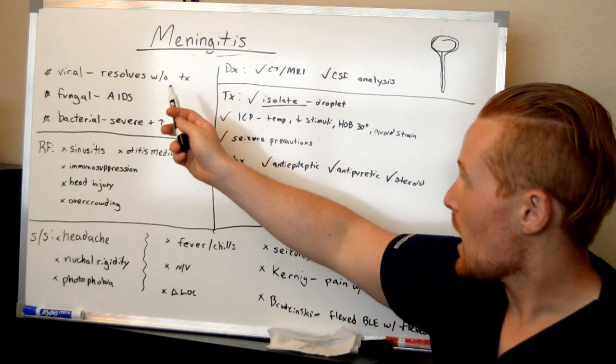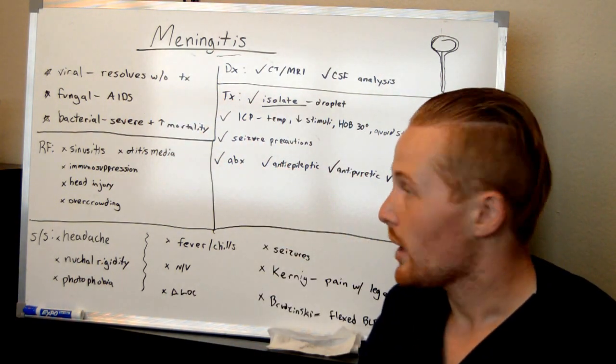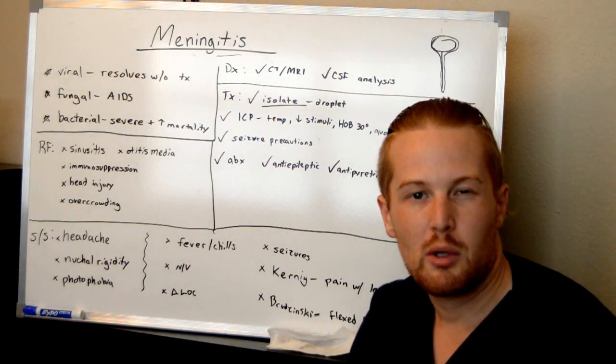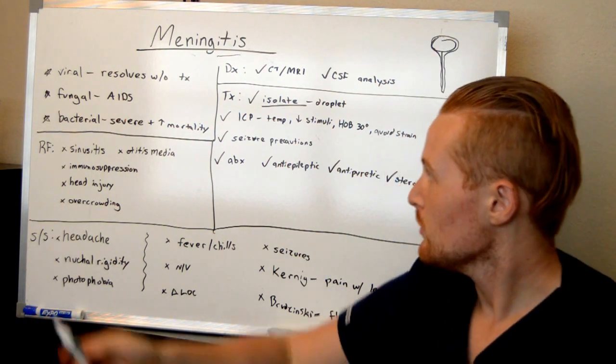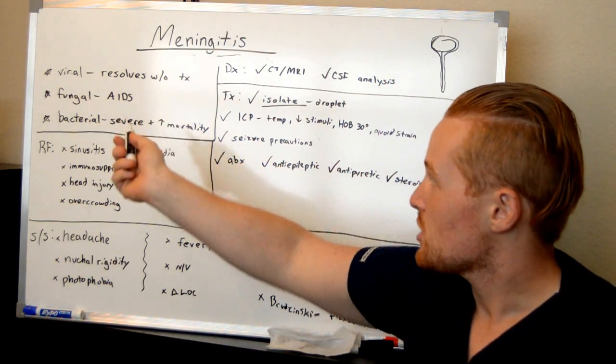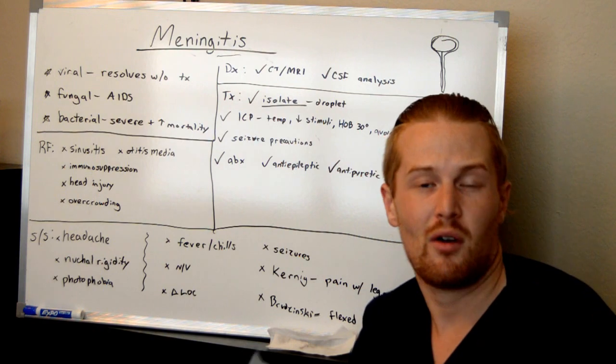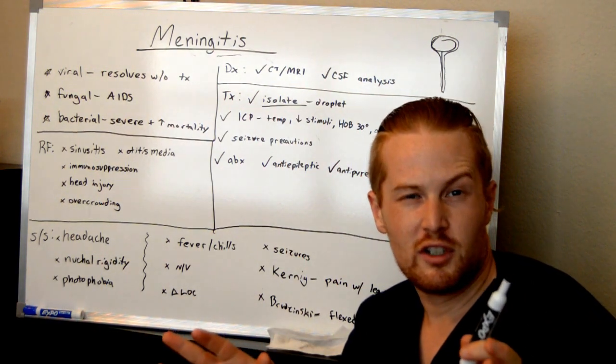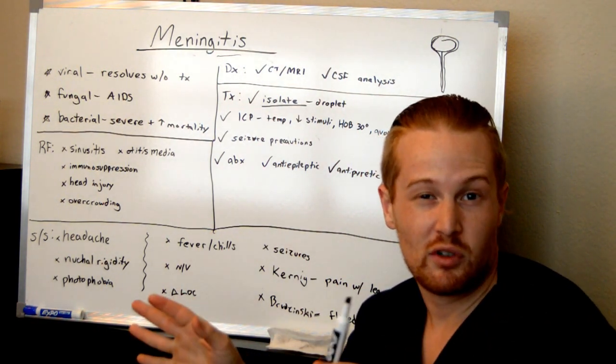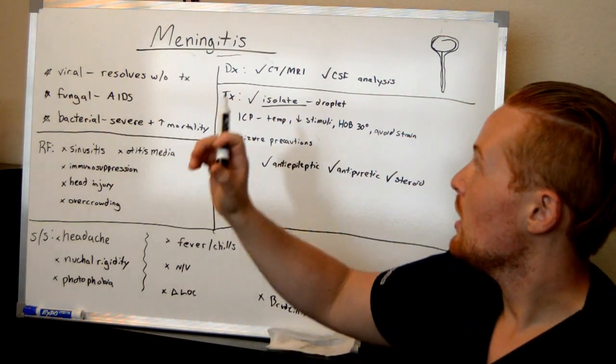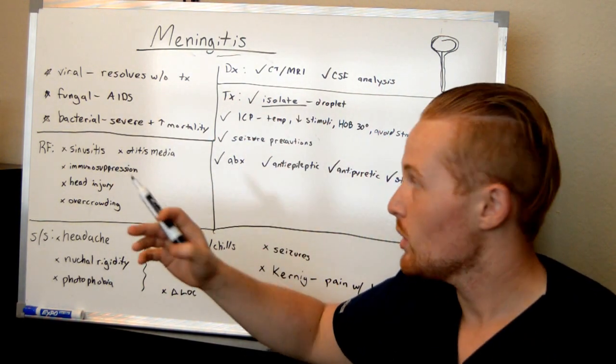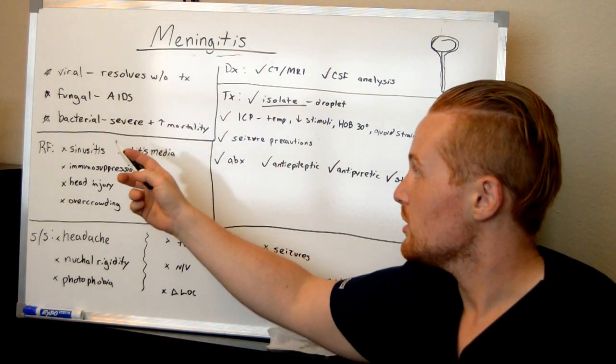Viral meningitis is quite common but it resolves on its own, typically without treatment, usually not so bad. Fungal meningitis is typically seen with AIDS because they have immunodeficiency disorders and are at risk for all kinds of fungal infections. The main one that we're going to talk about today, the severe one, is bacterial meningitis.